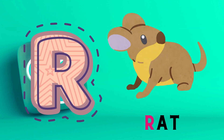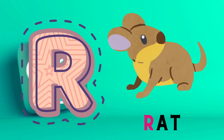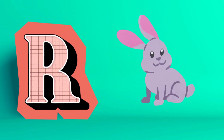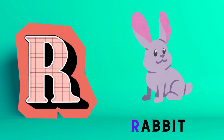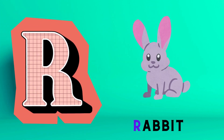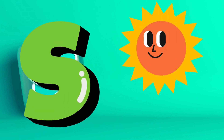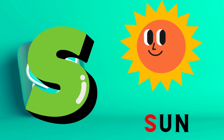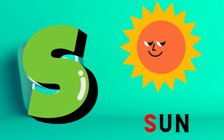R is for Rat. R, R, Rat. R is for Rabbit. R, R, Rabbit. S is for Sun. S, S, S, Sun.